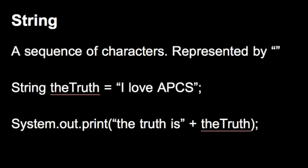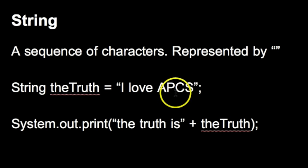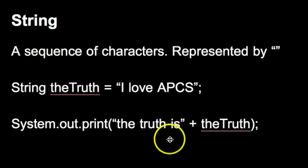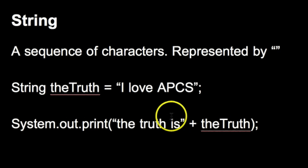A string is a sequence of characters, and when you are initializing a string, the value of that string is represented by quotes — so it's bounded in quotes. If we look at this example here, string 'theTruth' is equal to 'I love APCS'. And this print statement says System.out.print, 'the truth is ' plus theTruth. So this will print out: the truth is I love APCS. That may be true or not for you guys, but definitely I do.